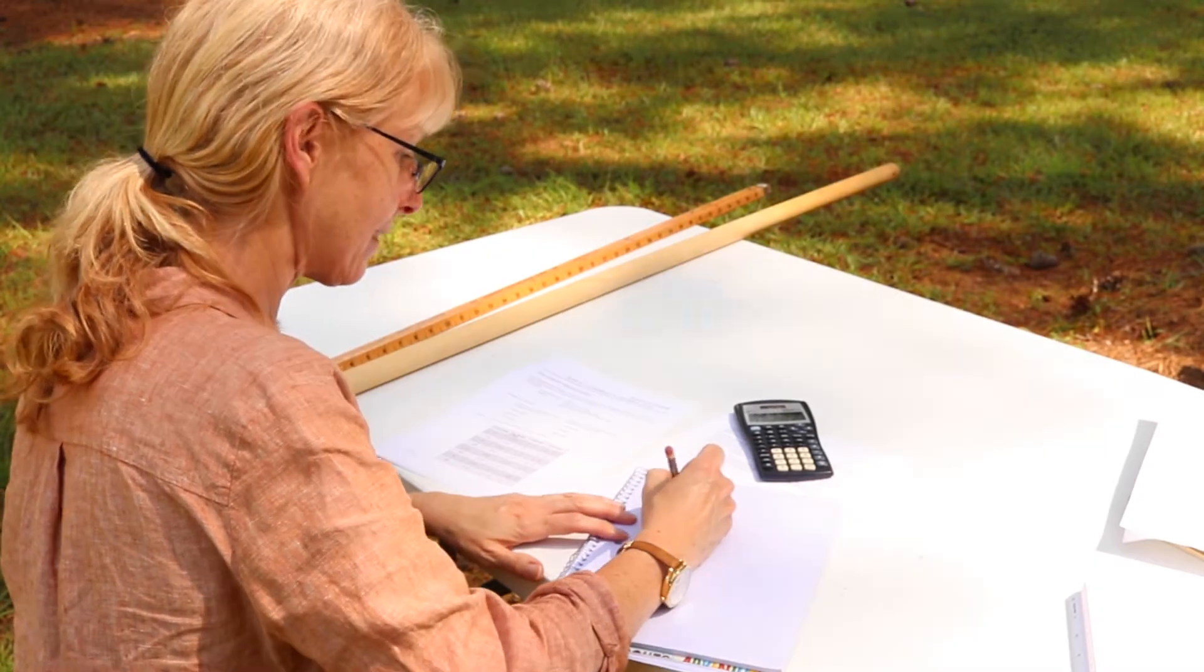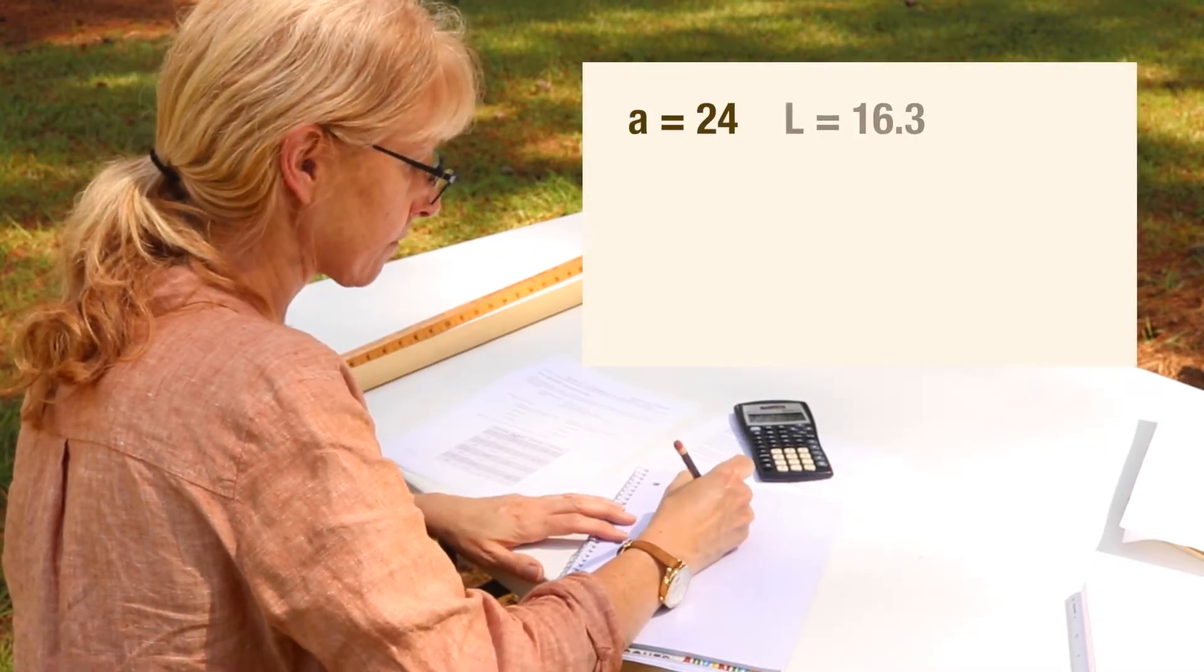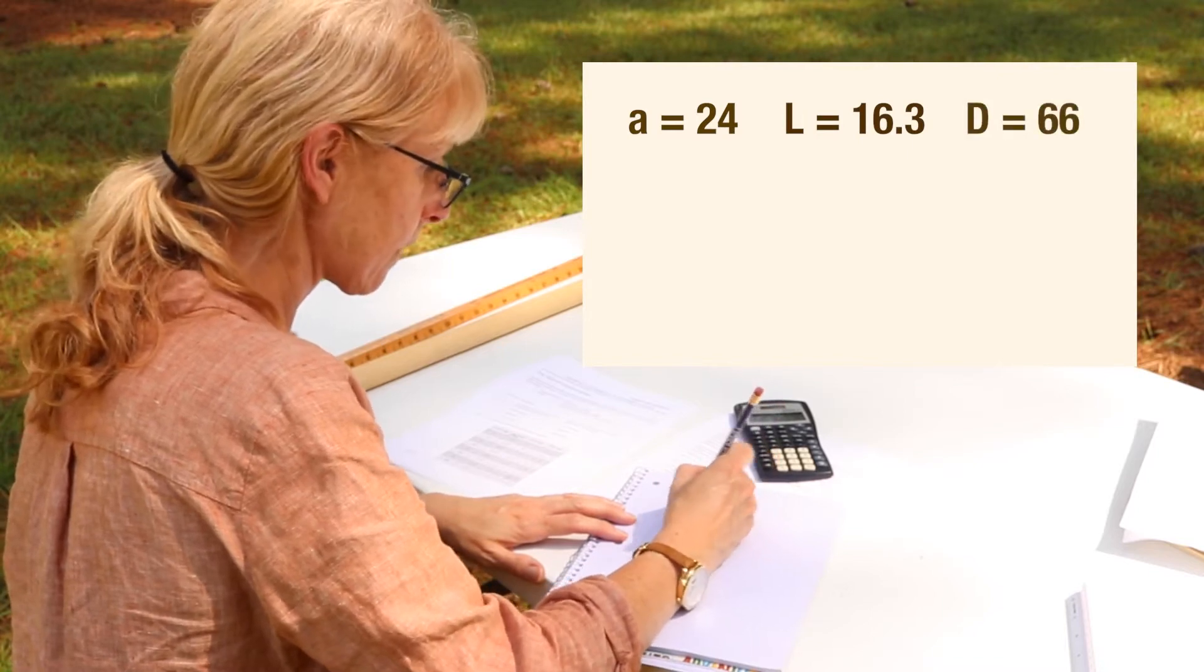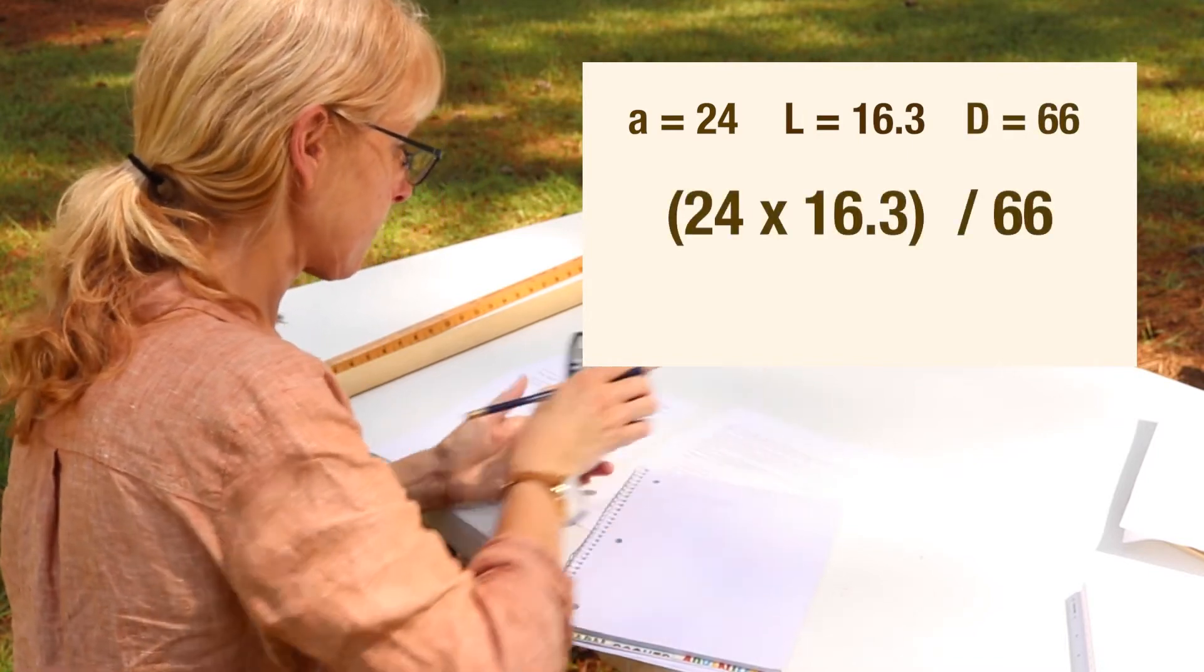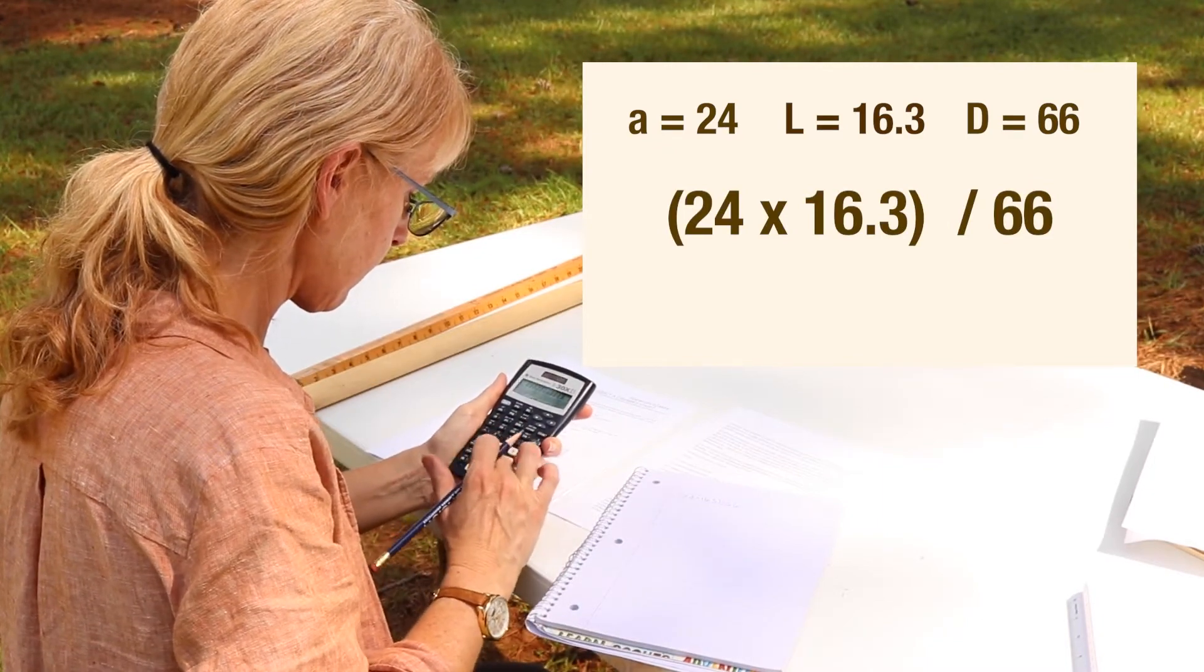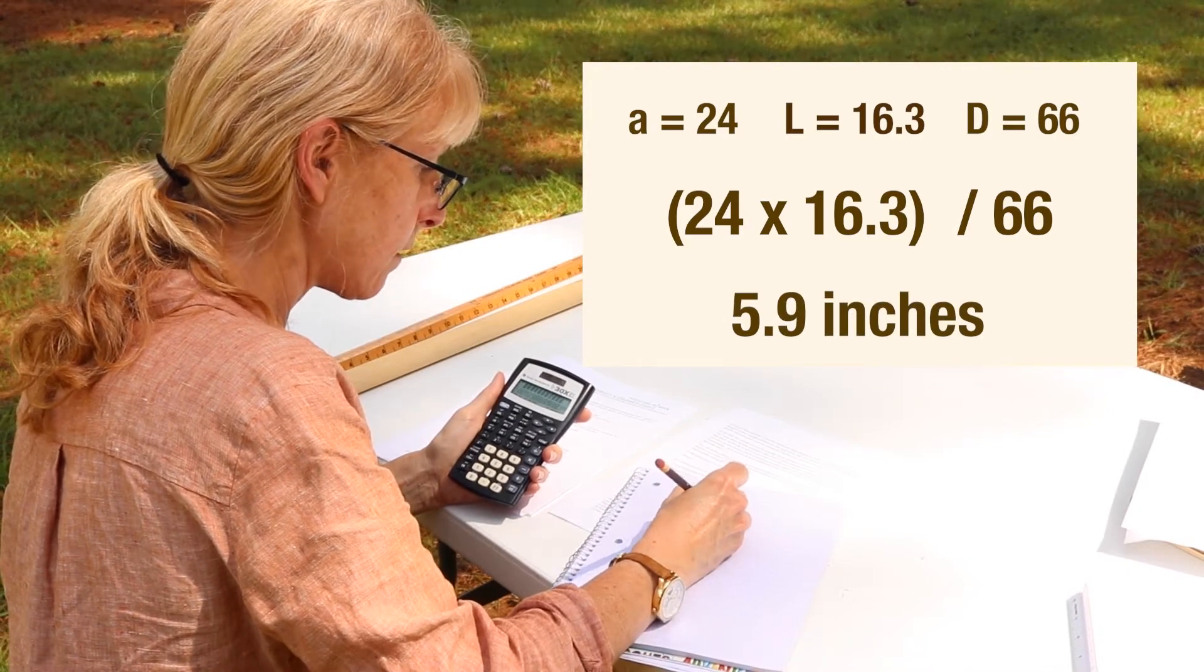For example, if you had an arm reach of 24 inches and you were estimating for one log standing 66 feet away from the tree, your measurement would be 24 times 16.3 divided by 66, or 5.9 inches, which is what you would mark on your merit hypsometer.